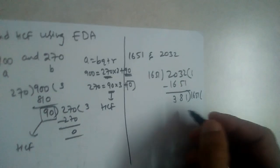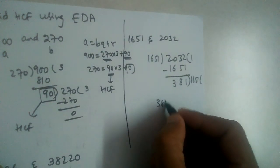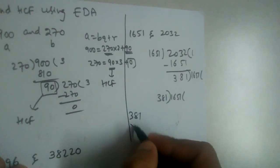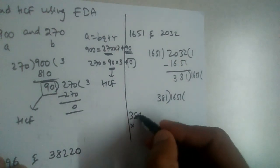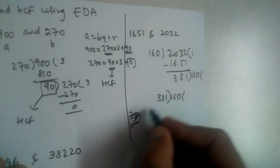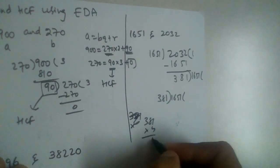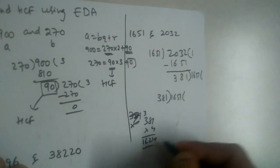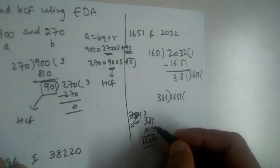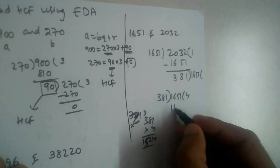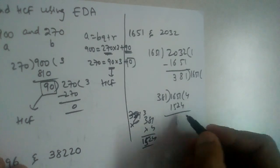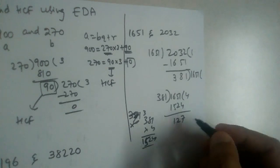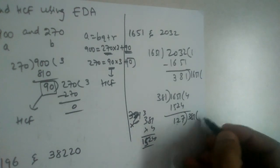Let me do it here: 1651 divided by 381. So 4 threes is 12. This will give us 127.